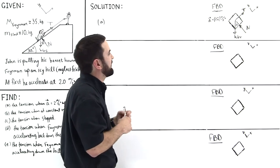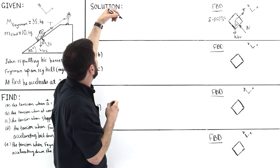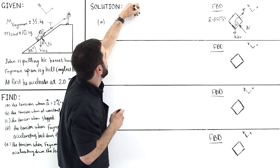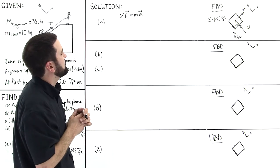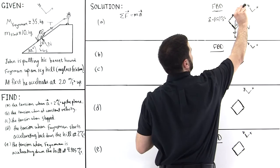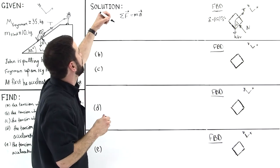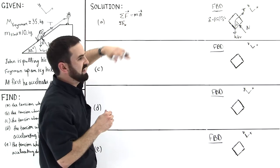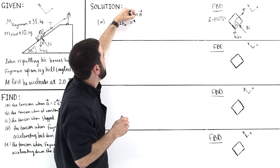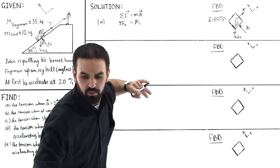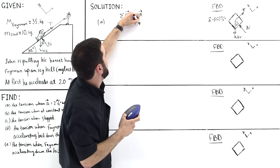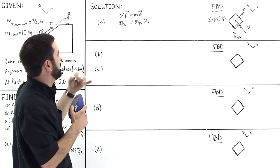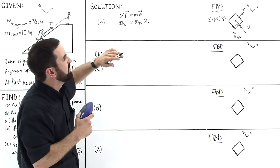Now we can use Newton's second law to analyze this problem. In general, the sum of the vectorial forces equals mass times acceleration. We're only going to consider motion along the x-axis, so this reduces to the sum of the forces along the x-axis as scalars, equal to the mass of Feynman plus the sled (M_FS) times the acceleration along the x-direction. The tension acts up along the x-axis, so we have plus T.